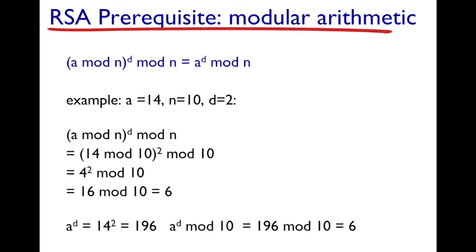Now let us consider a to the power of d, which is 14 squared, which turns out to be 196. Therefore a to the power of d mod 10 will be 196 mod 10, which will give you a value of 6.